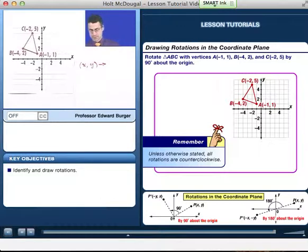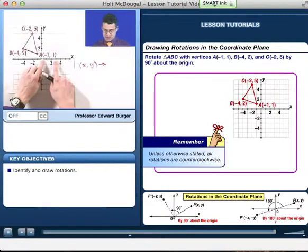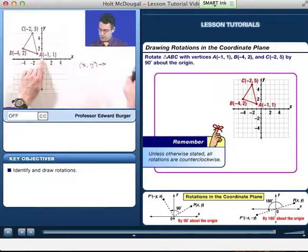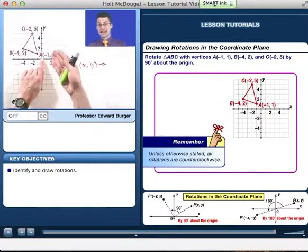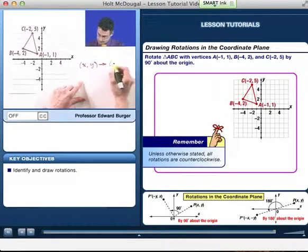Well, under this transformation, what happens to X? X would actually become, if you think about it for a second, the X value for the new thing would become the negative Y of the old thing. And the new Y would be the old X.